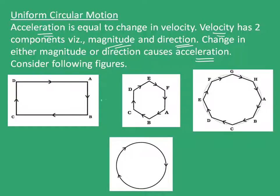Now consider a hexagonal track — the athlete must change his velocity six times to complete the track. Increasing the number of sides to eight means changing velocity eight times. Now consider a circular track: the velocity of the athlete changes at every point of the circle because his direction changes continuously at every point. Hence he has an acceleration throughout the motion.